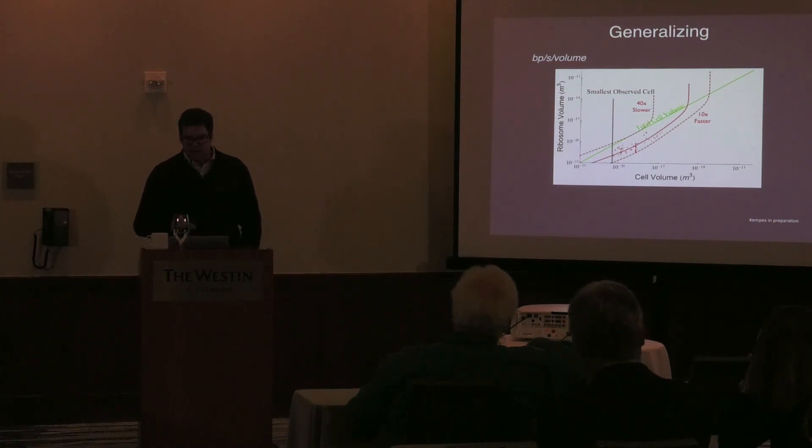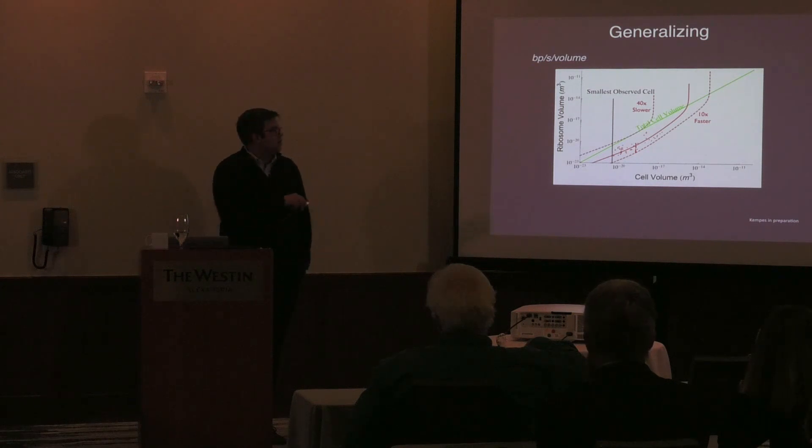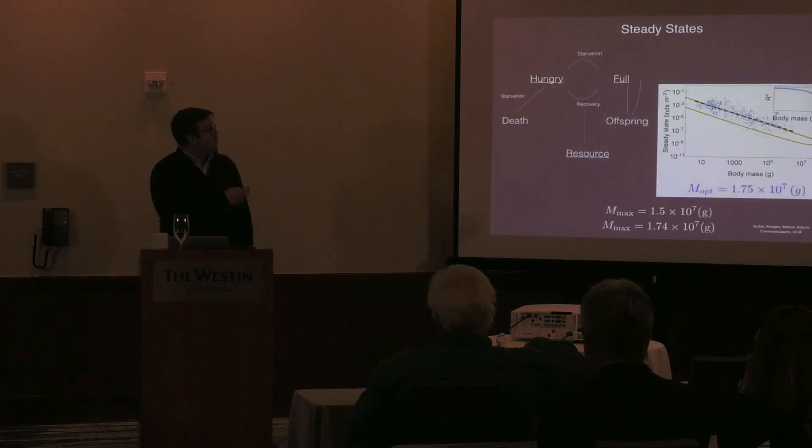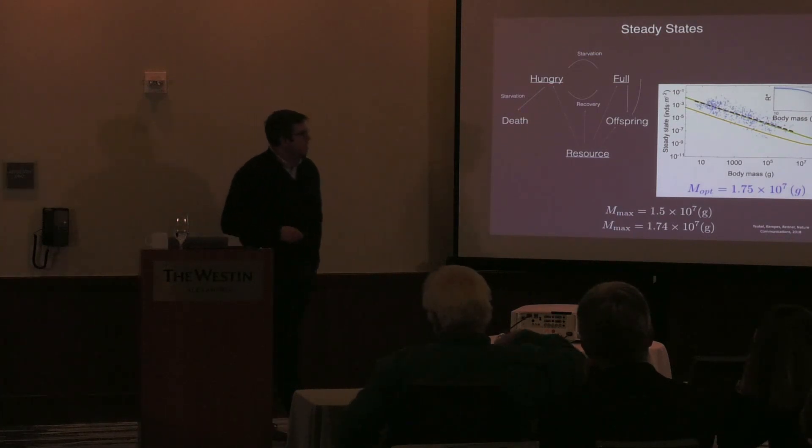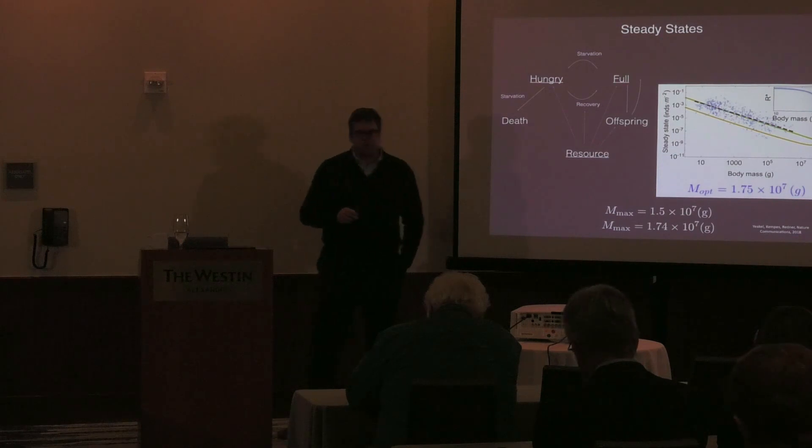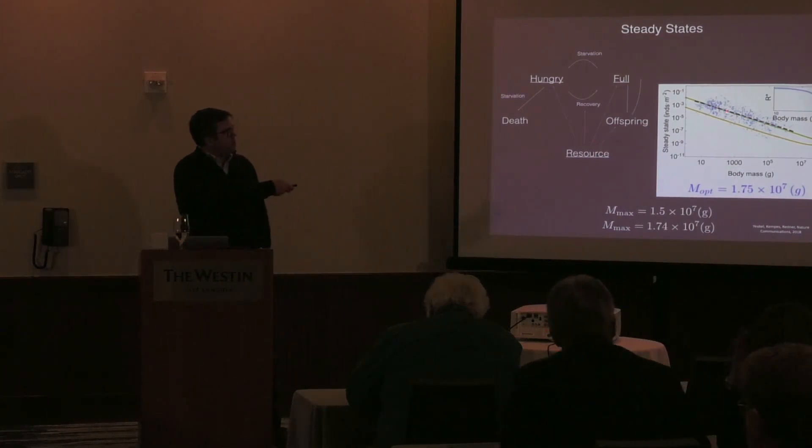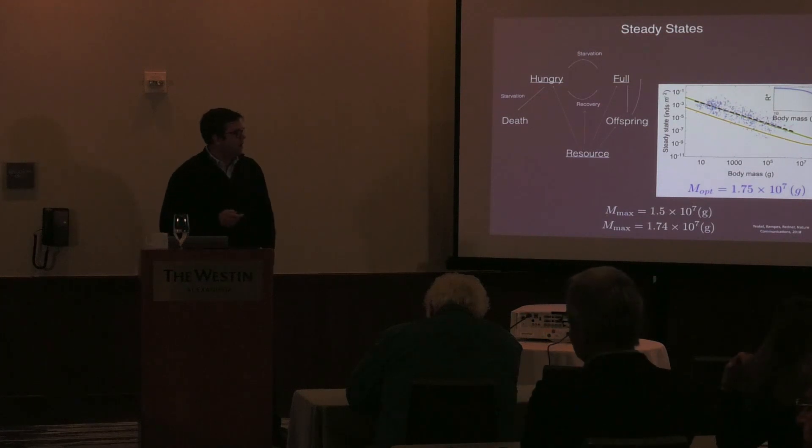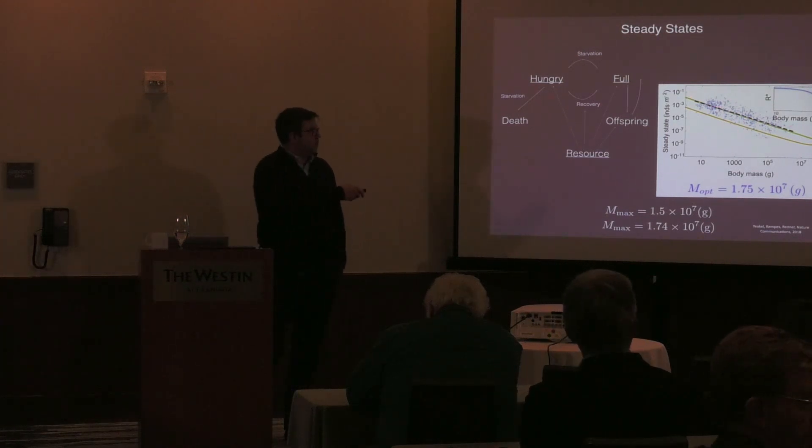I also want to mention that we went one direction with this metabolic theory to start thinking about very detailed cellular physiology and dynamics. We can also go the other direction and start to build population models, this has already been mentioned several times this morning, with the same sort of energetic principles. Where if we have a population of mammals on a landscape transitioning between being full and hungry, and eventually dying, coupled to a resource where the full state can produce offspring and the hungry state can't, then we can do things like predict Damuth's law, which is nice. There's been for a long time simple arguments about where this law comes from. But we can show that it emerges out of these dynamics coupled to the energetics.